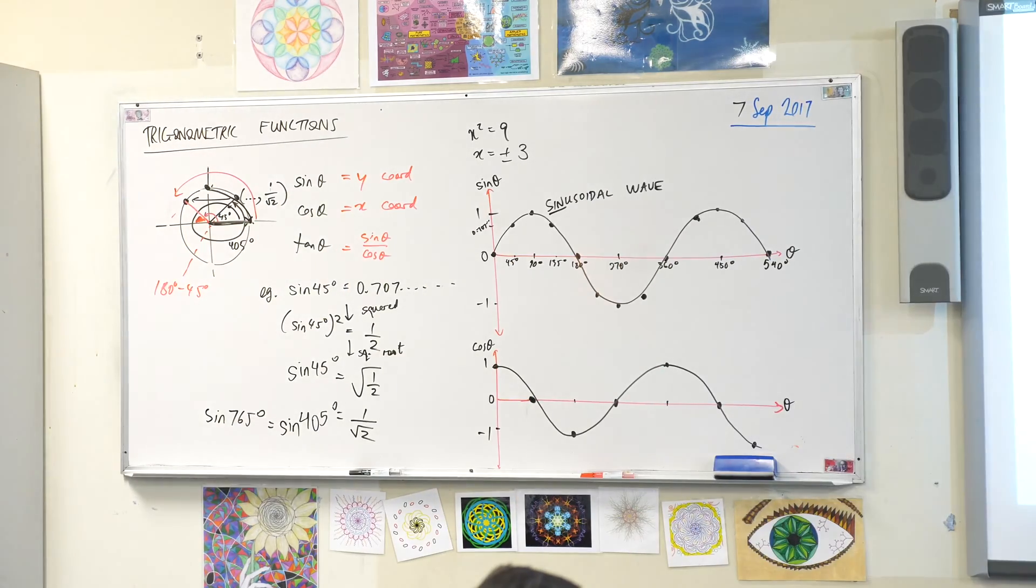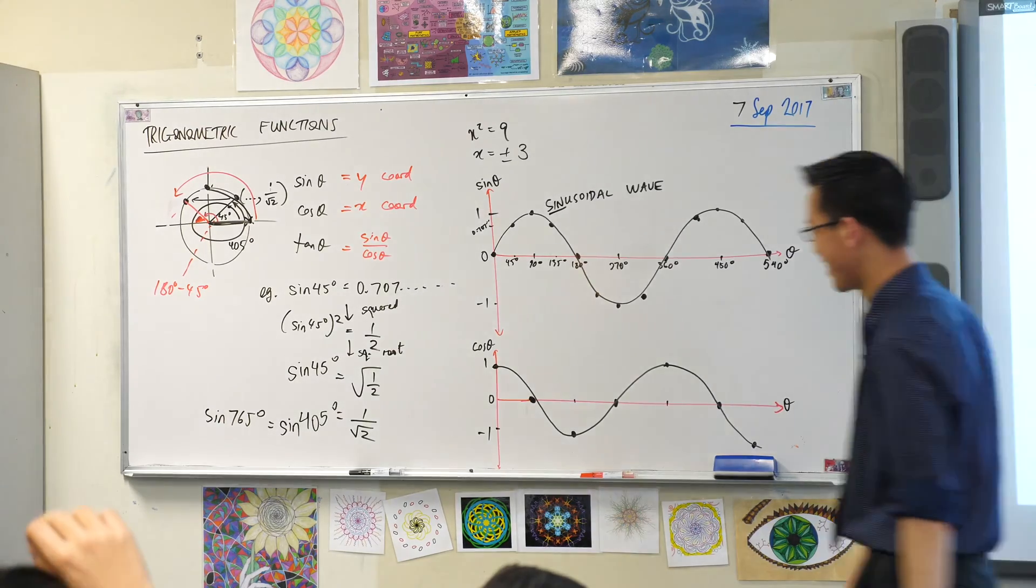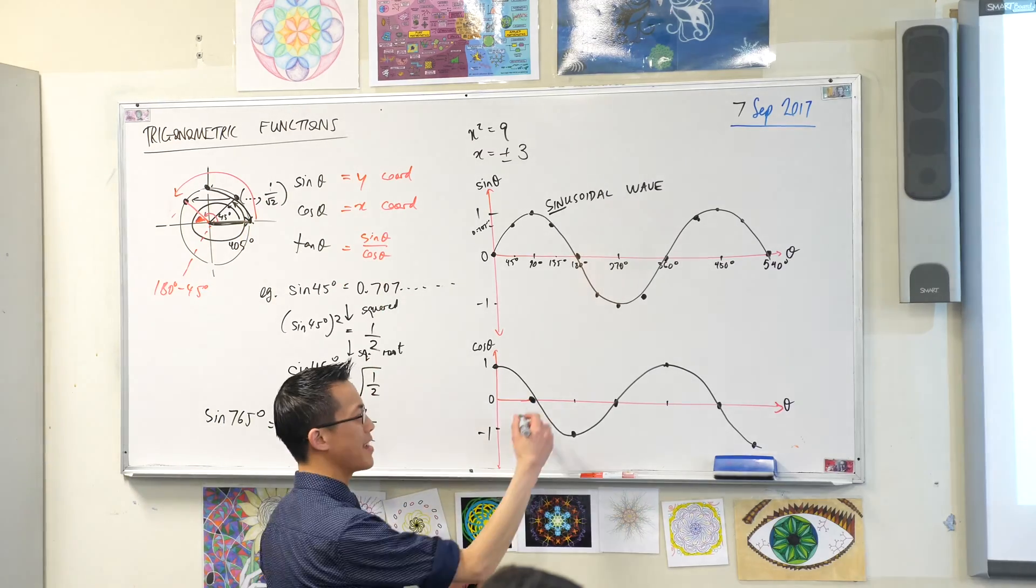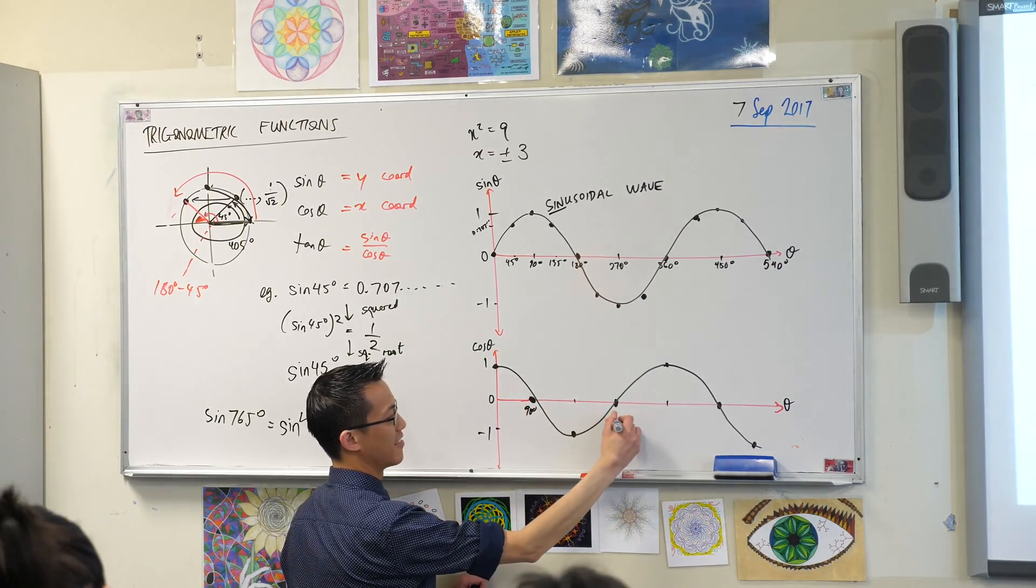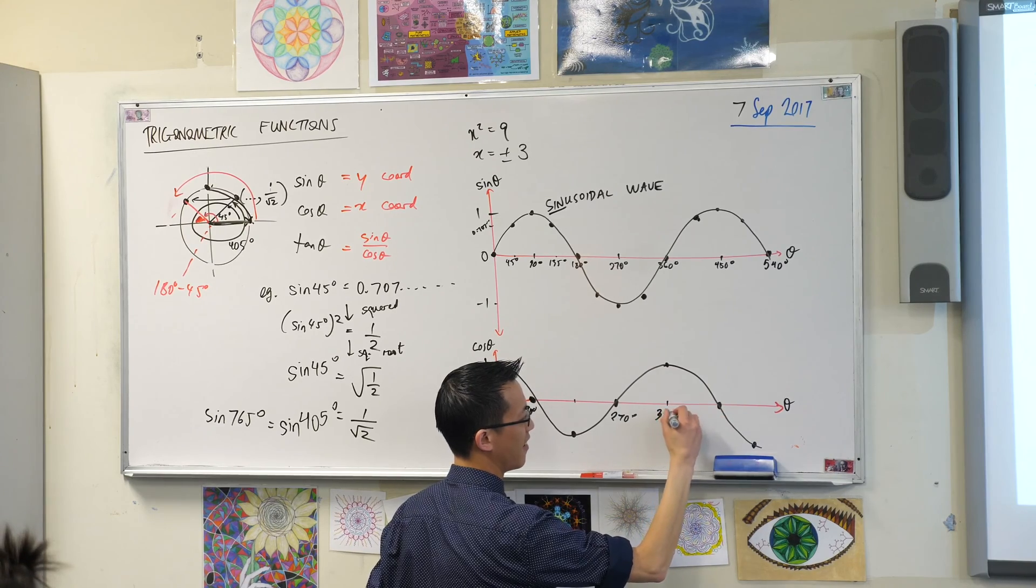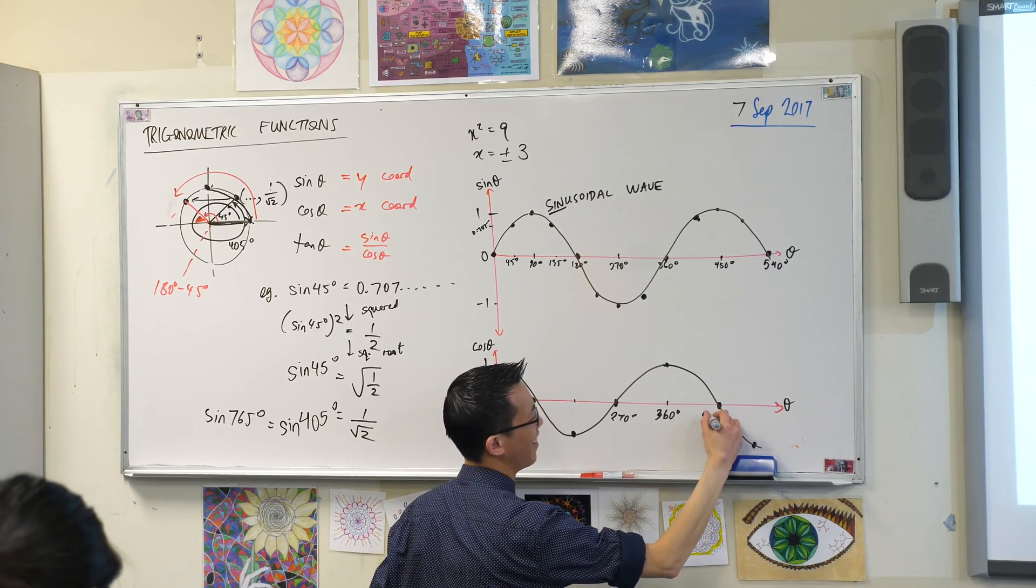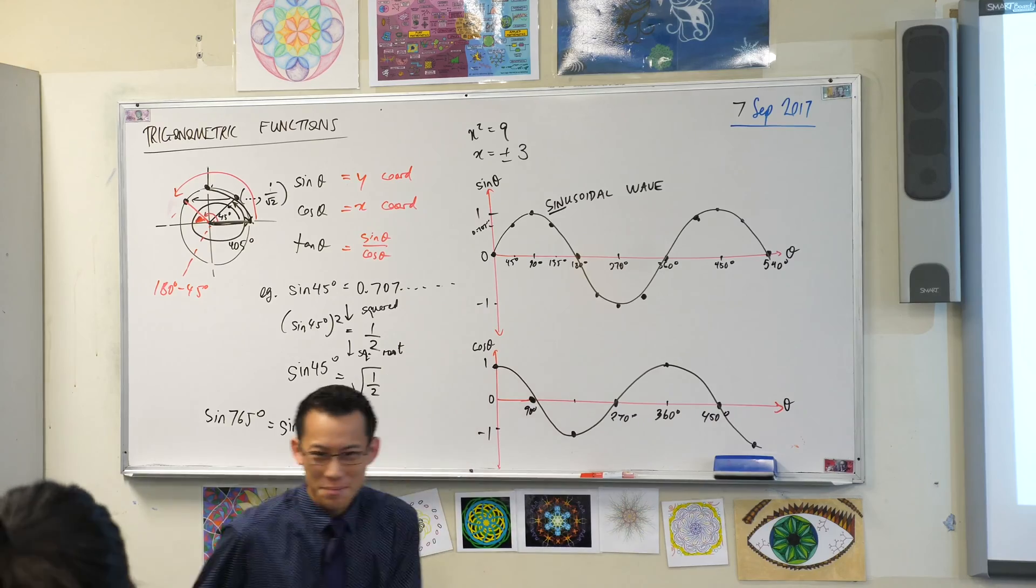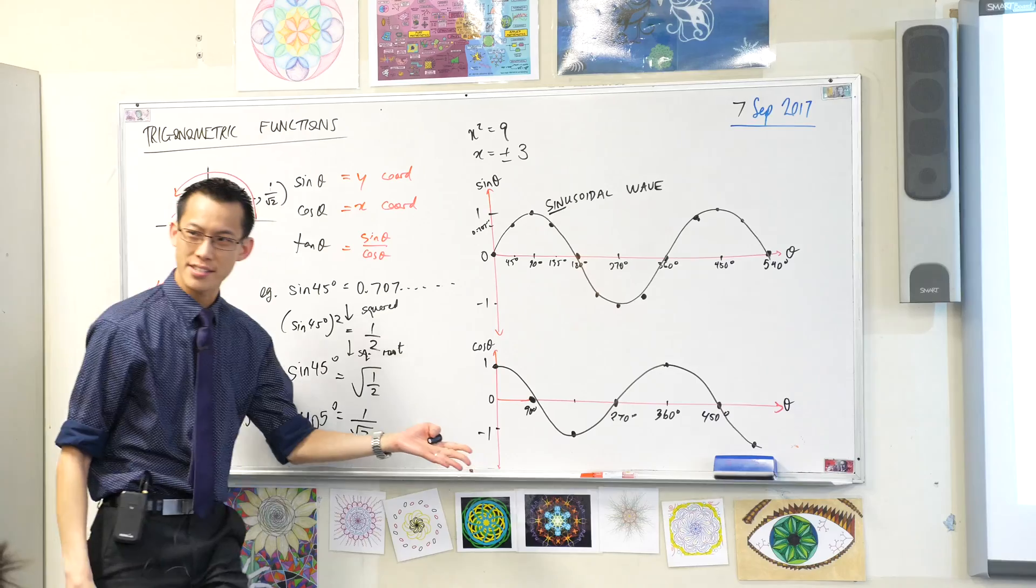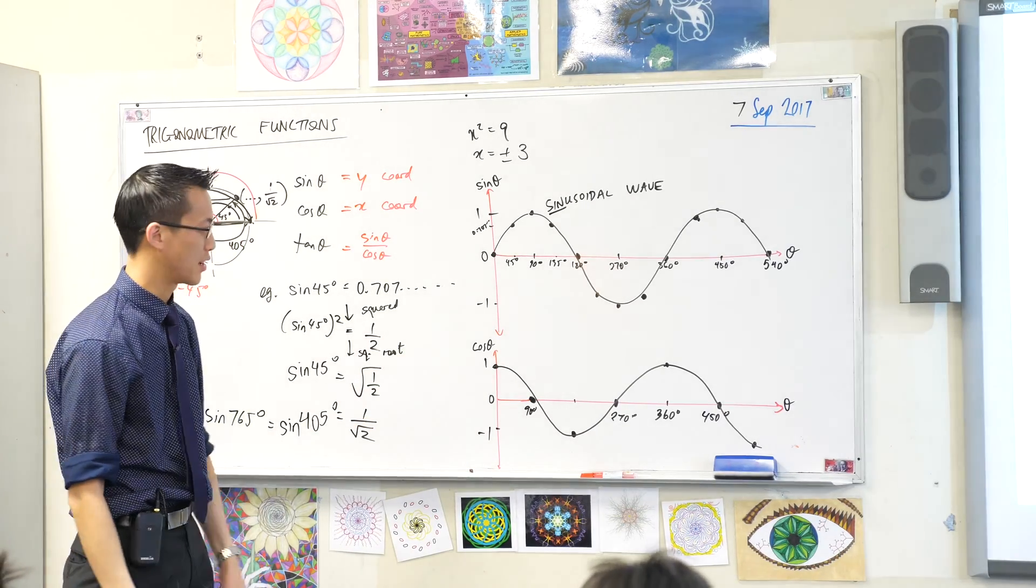So, thank you very much. So this guy here, can you add in some values for me? This is the sine curve. This is the cosine curve. What about tan? Now, I'll come to tan in a second, but tan's super weird.